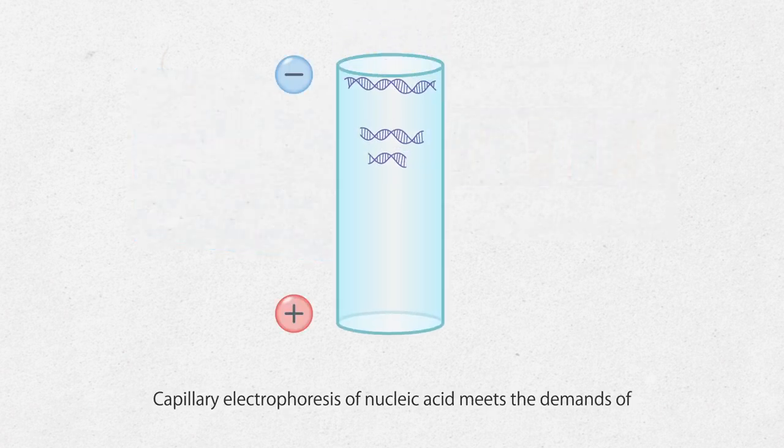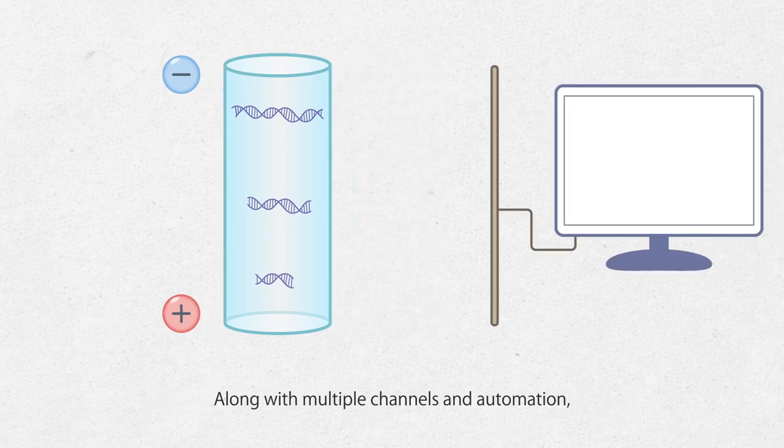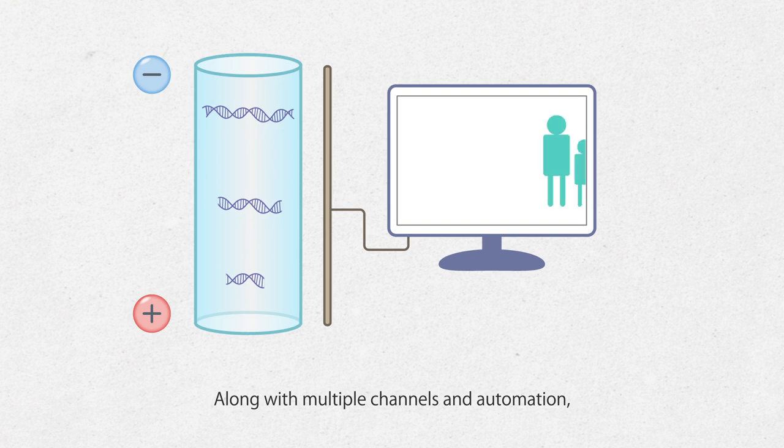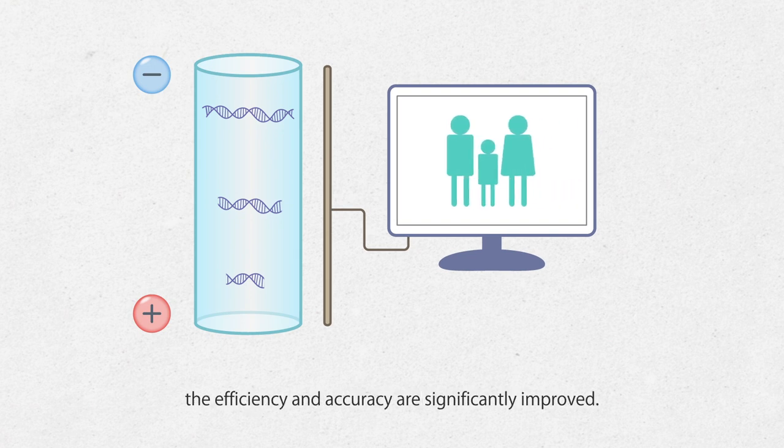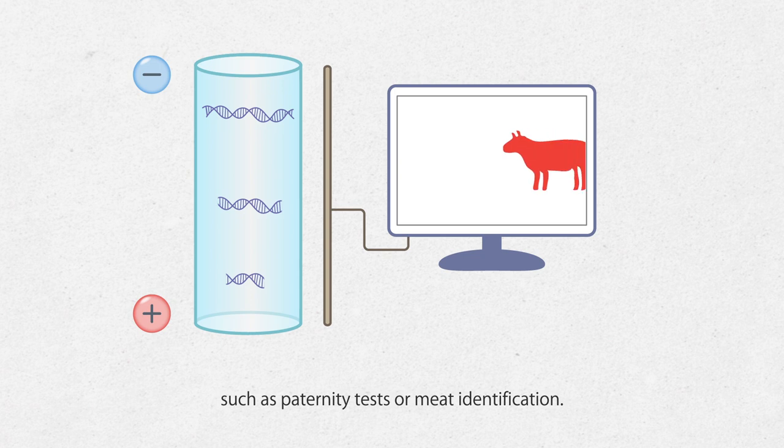Capillary electrophoresis of nucleic acid meets the demands of less sample and high separation speed. Along with multiple channels and automation, the efficiency and accuracy are significantly improved. This technology can also be applied in forensic science such as paternity tests or meat identification.